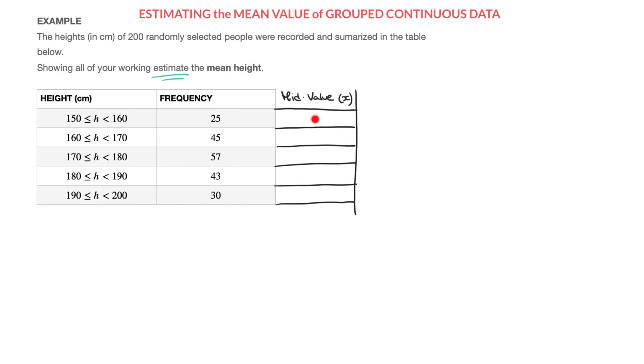Now, for the first cell we have here, we're looking for the mid-value of the class interval going from 150 to 160 centimeters. Well halfway between 150 and 160 would be 155 centimeters, so I'll write 155. Similarly, the mid-value between 160 and 170 would be 165.